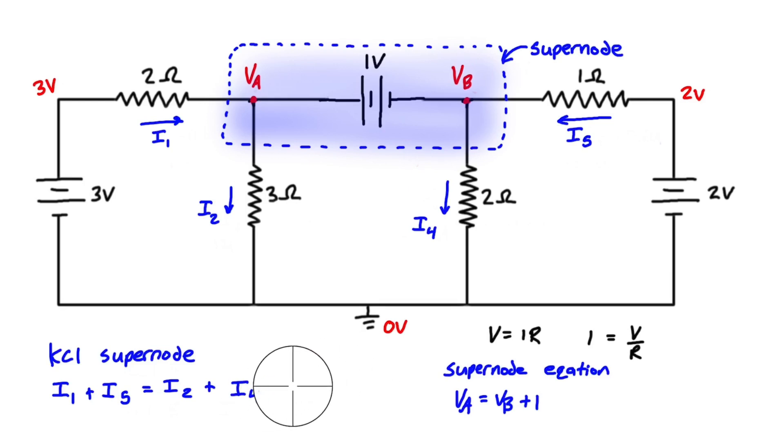So that's all super node is it's not very complicated it's no more difficult than a basic nodal analysis problem but you just have to identify a super node and basically that's just going to be one node connected to another node with a voltage source just draw a border around them and treat them as the super node and then proceed with these steps.